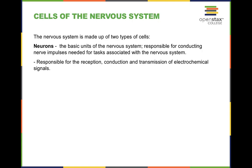There are a couple of basic cells of your nervous system to focus on. If you're in my class, this will be for a test. These are neurons as well as glial cells. Neurons are responsible for receiving, interpreting, and then sending electrochemicals on to the rest of your brain and other parts of the nervous system.